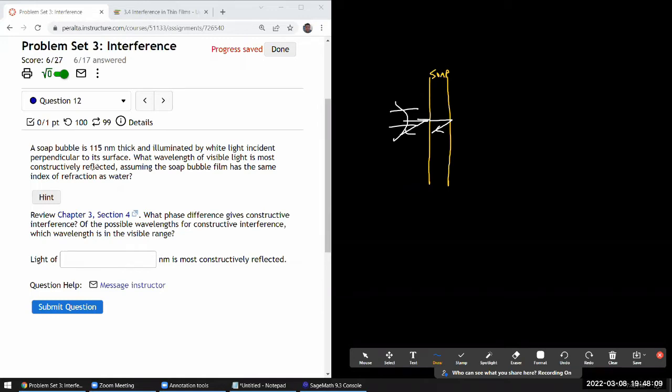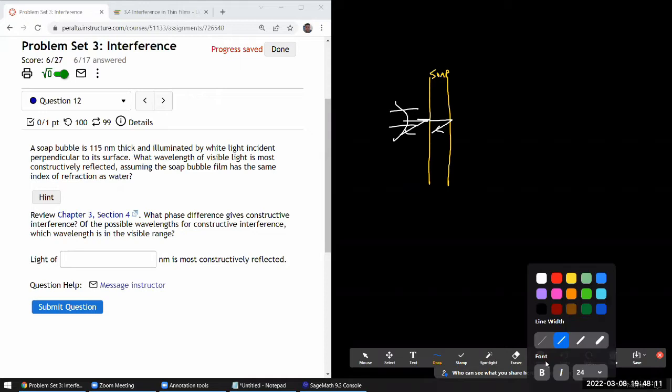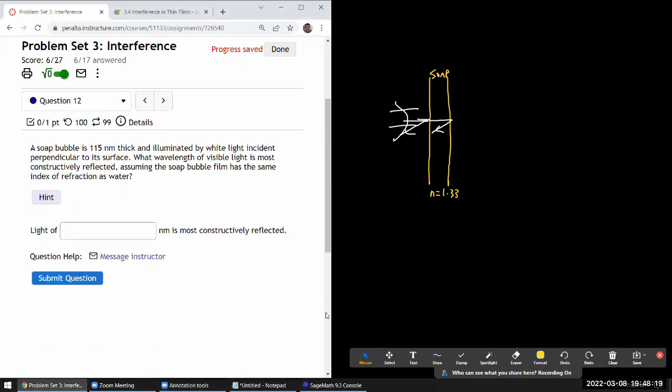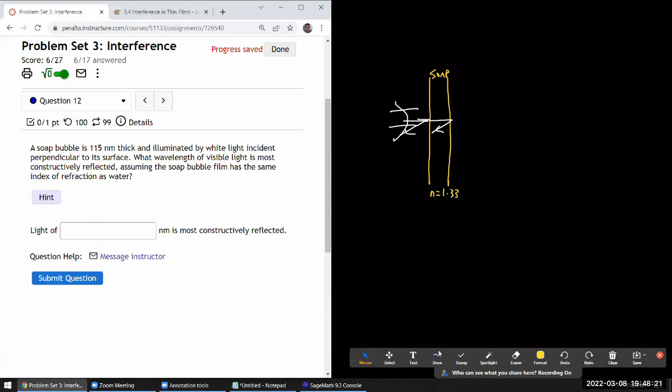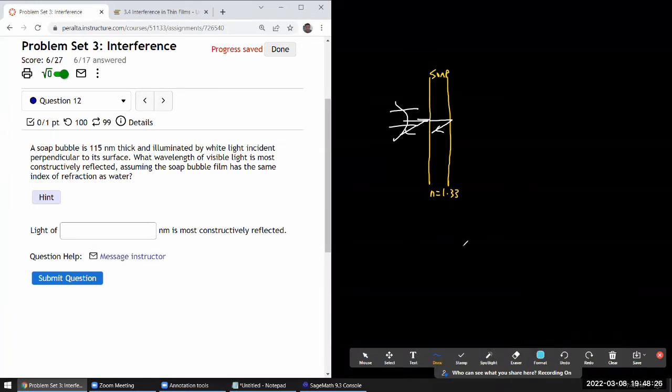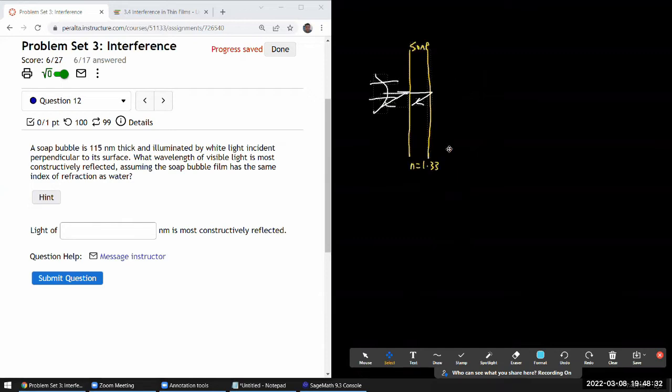Assuming the soap bubble film has the same index of refraction of 1.33. So I'm going to have to work on some mathematical expression and this kind of scenario is where really the best thing to do and what I recommend that you do is fall back on the most basic relationship that you have when you are dealing with interference. The most basic relationship that you have is based on the phase difference.